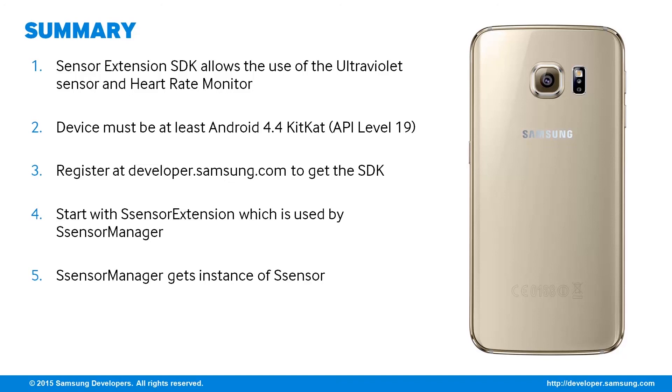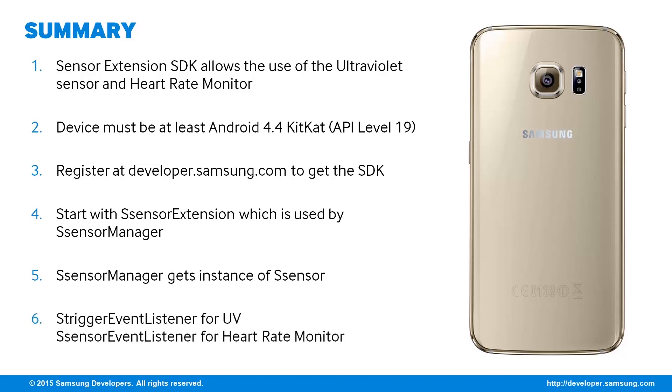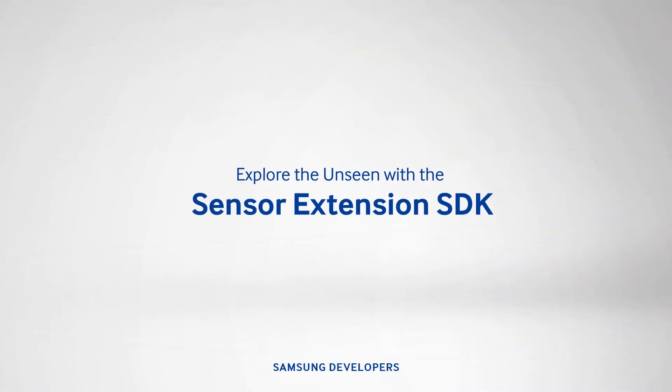There are two types of event listeners: the sTriggerEventListener for ultraviolet and sSensorEventListener for the heart rate. That concludes our episode on the Sensor Extension SDK. I hope it gave you ideas for making great apps that use the ultraviolet and heart rate monitor sensors. To get more details and technical information, please visit us at developer.samsung.com. Don't forget to give a thumbs up on this video and subscribe to Samsung Developers. Thank you for watching and see you soon on the next episode.